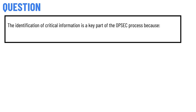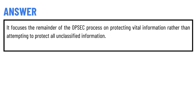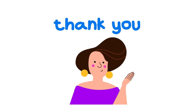Our today's question is: The identification of critical information is a key part of the OPSEC process because — the correct answer of the question — it focuses the remainder of the OPSEC process on protecting vital information rather than attempting to protect all classified information. That's the correct answer of the question.